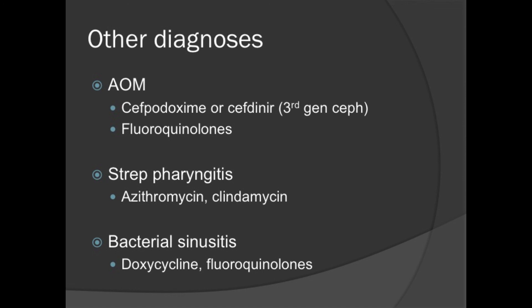We want to avoid quinolones because of their significant side effect profile — only use them if there's no good alternative. For strep pharyngitis, if you're not giving penicillin or amoxicillin, you can give azithromycin or oral clindamycin. For bacterial sinusitis, you can give doxycycline, or fluoroquinolones if you have to. Fluoroquinolones are always listed last given their high side effect profile.